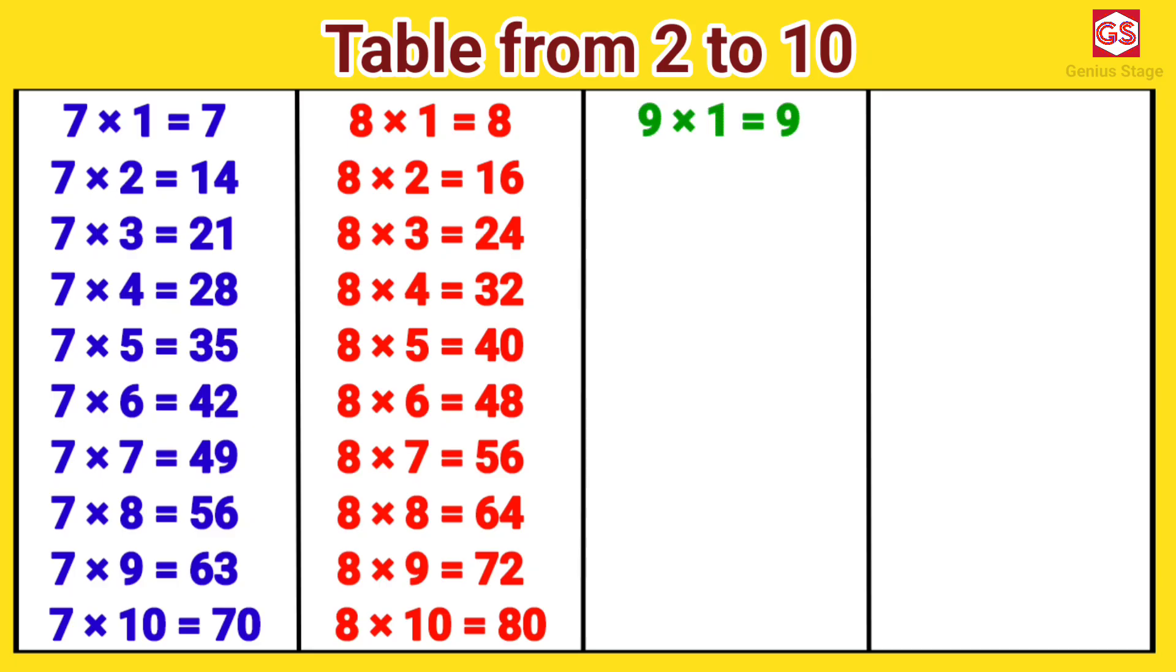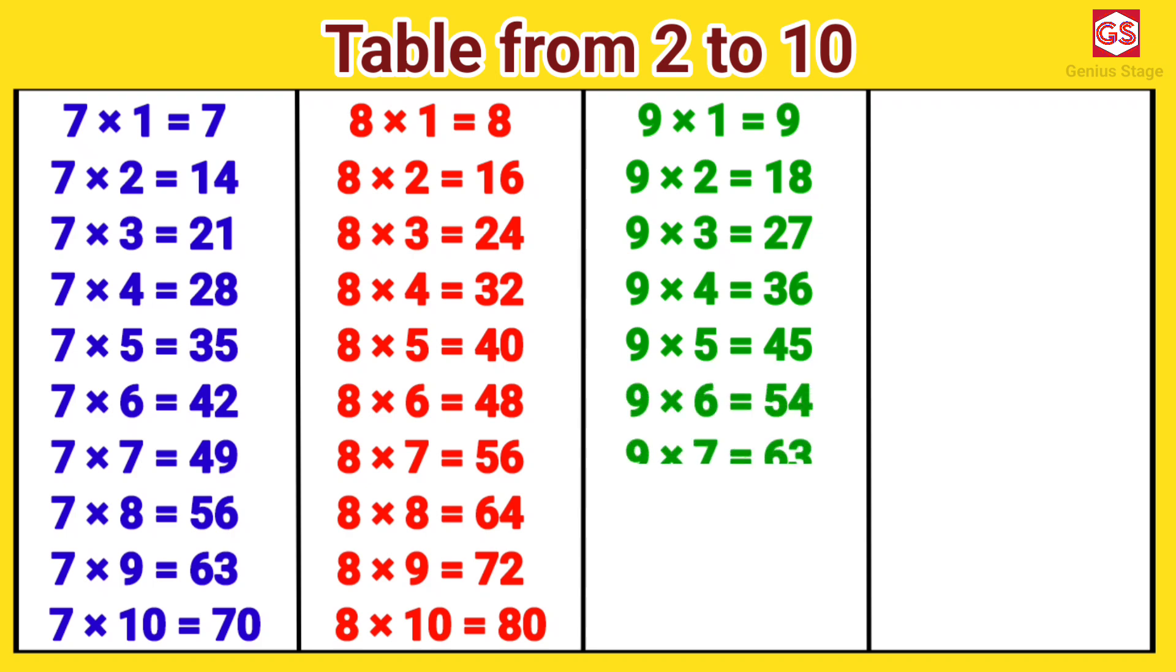9 ones are 9. 9 twos are 18. 9 threes are 27. 9 fours are 36. 9 fives are 45. 9 sixes are 54. 9 sevens are 63. 9 eights are 72. 9 nines are 81. 9 tens are 90. 10 ones are 10